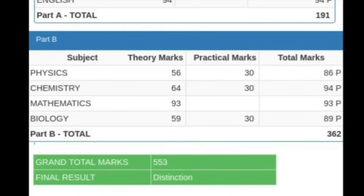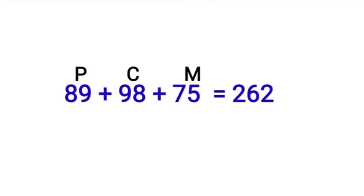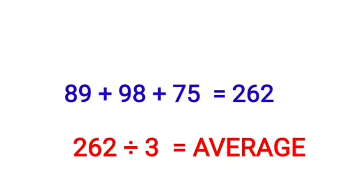Only your Part B matters — whether you are a Computer student or PCM or PCMB, that is not required. Your Physics, Chemistry, and Maths marks are the rank-determining factors. These three subjects are very important. So in our example, we add 89 plus 98 plus 75 to get 262, and then divide 262 by 3 to get the average. This average is used for calculating your KCT rank along with your KCT mark.